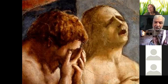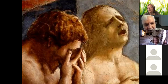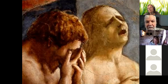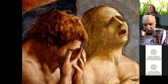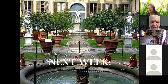Masaccio was a very important artist in that period. And Michelangelo, as a young apprentice, went to the Brancacci Chapel and did all sorts of drawings from Masaccio. Masaccio was really the exemplar for the young Michelangelo.